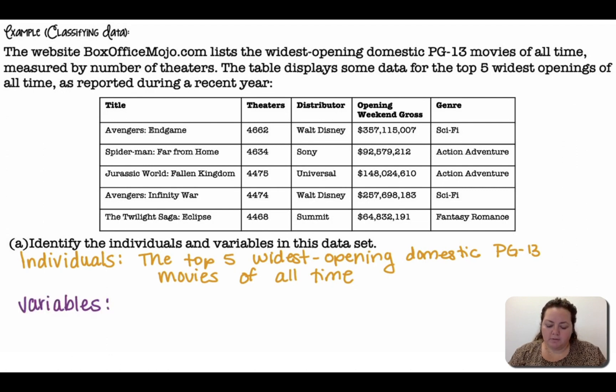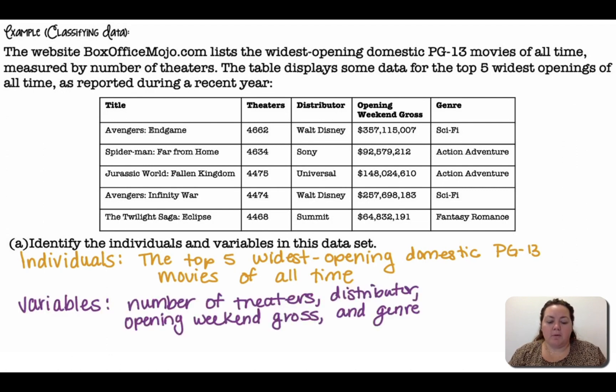All right, the variables are the number of theaters, the distributor, the opening weekend gross, and genre. So there are four variables.